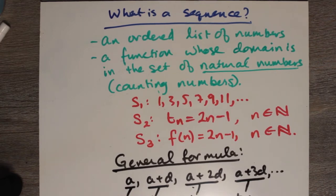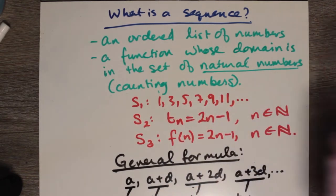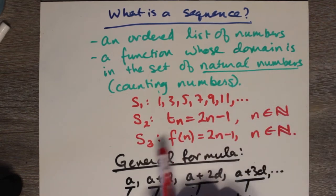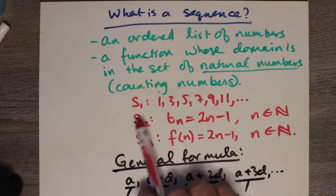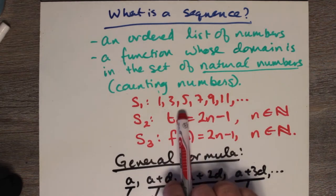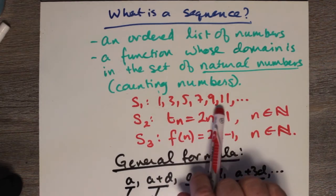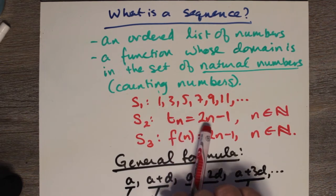An example of a sequence would be something like 1, 3, 5, 7, 9, 11, and so on — the set of odd numbers. You can also say the same thing for the set of even numbers. You can also make up a formula to generate the set of odd numbers. We're calling the sequence S1 for the written-out list, and S2 for the list with a formula in terms of T and N.